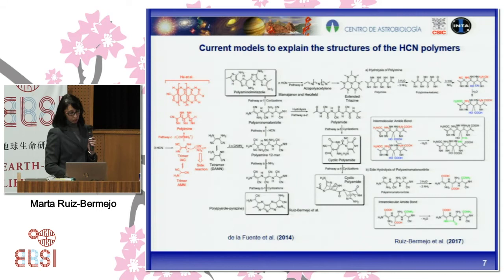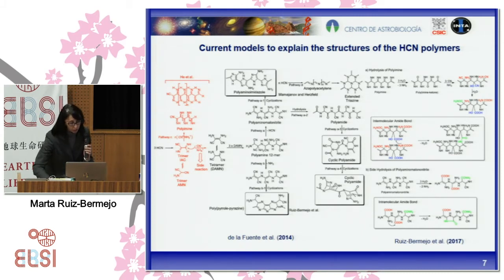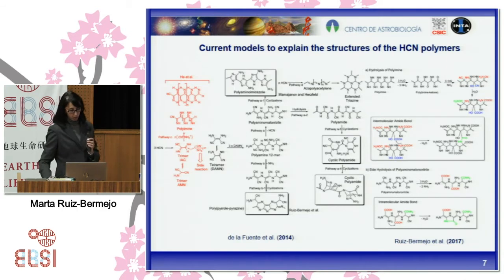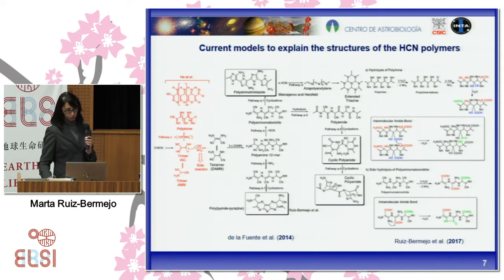Regarding the complex nature of hydrogen cyanide polymer, several recent models have been proposed to explain its structure, including those by He, Mamajanov, Ertel, Minard, Matthews, and our own group. Independently of the structure, it is well known that important monomers and other organics are released when hydrogen cyanide polymers are hydrolyzed. Numerous studies carried out over the last 50 years have worked to identify the molecules present in hydrogen cyanide polymers, with notable contributions from groups of Ferris, Orgel, Oro, Miller, Minard, Matthews, and Negrón-Mendoza.